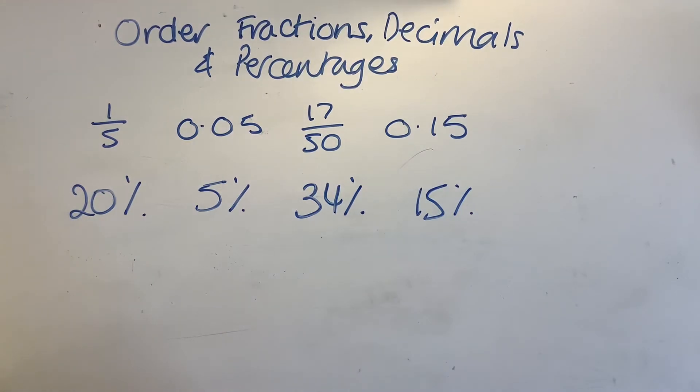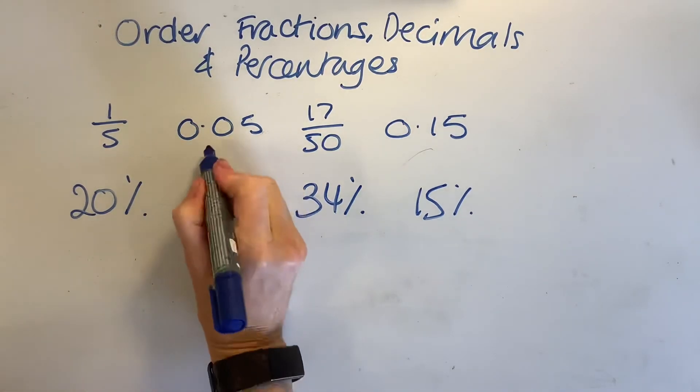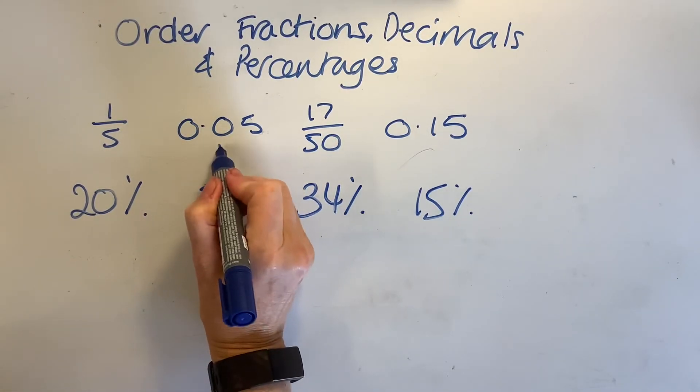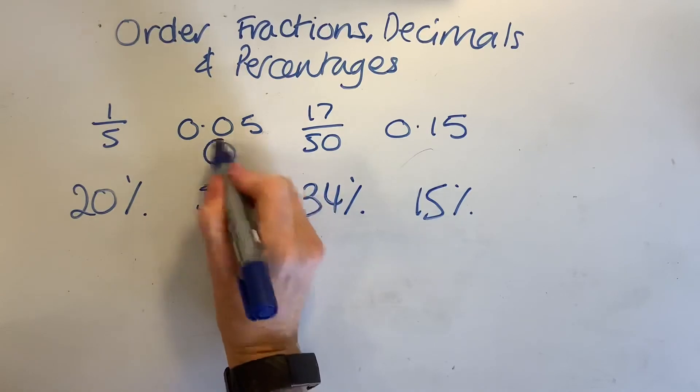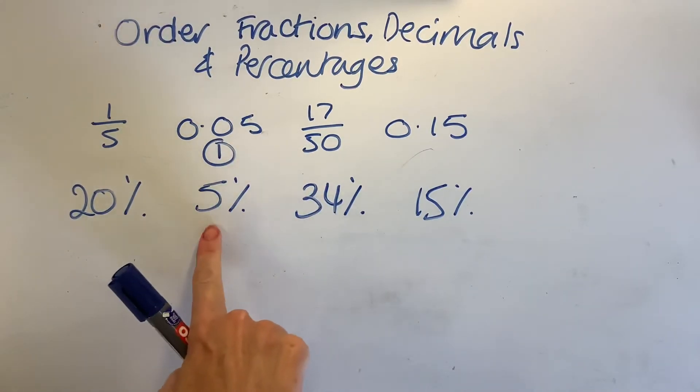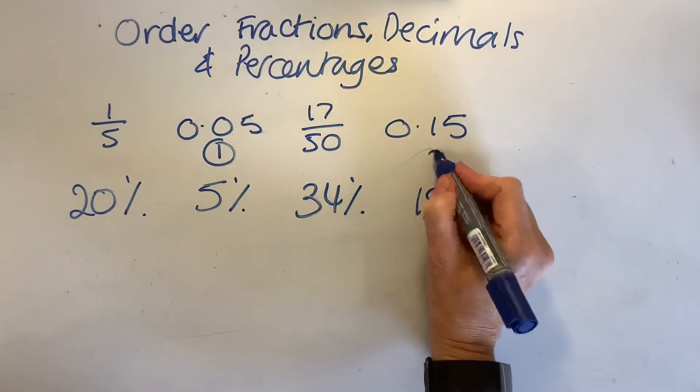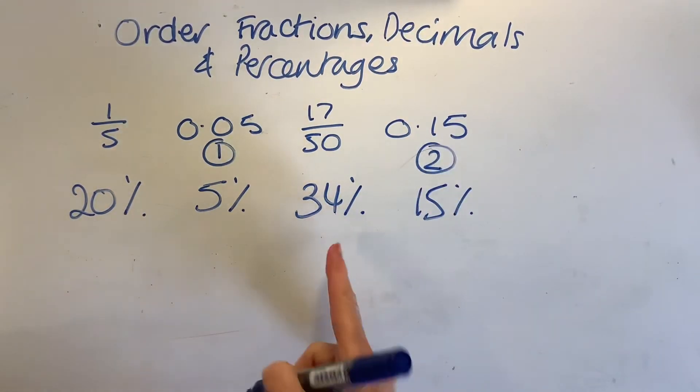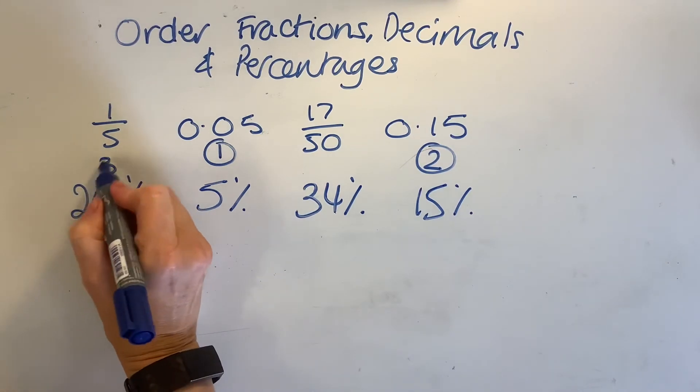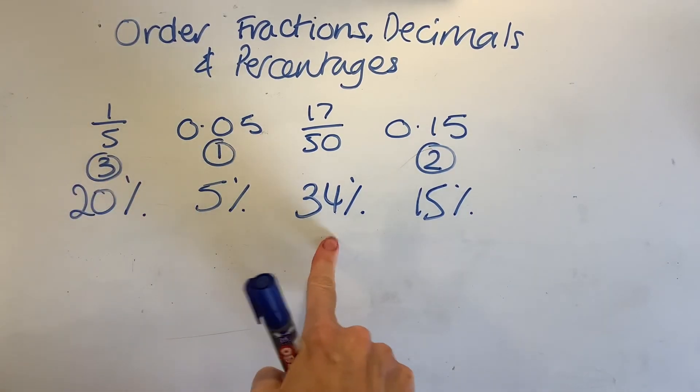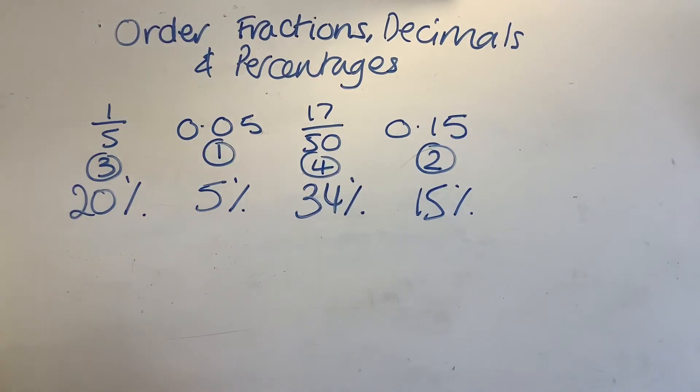So if I want to put them in order, which is the smallest one? I can see that this is the smallest one. So what I would do, my nice easy method is I would write one there. That's the smallest one. And then next one, bigger than 5% is my 15%. So I'm going to write two there. Then I've got 20%, which is three. And 34%, which is four. Now you're then asked to put them in the correct order, but you don't put them in this order. You put them in the original order.